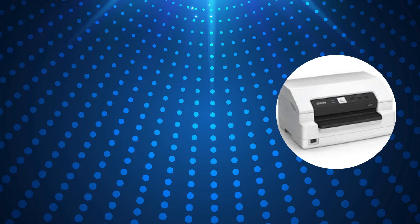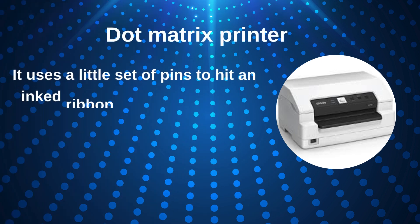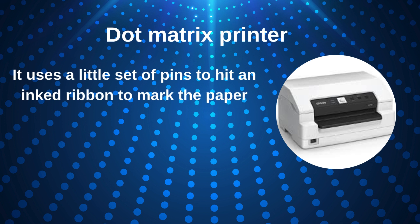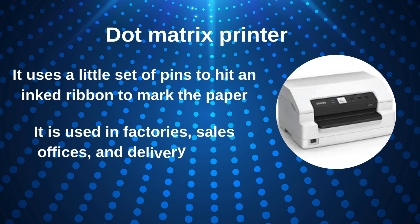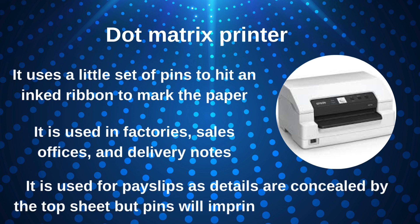Number 6, dot matrix printer. It uses a little set of pins to hit an ink ribbon to mark the paper. It is used in factories, sales offices, and delivery notes, where function is more important than high quality or good impression. It is used for payslips as details are concealed by the top sheet, but pins will imprint on a sheet behind.